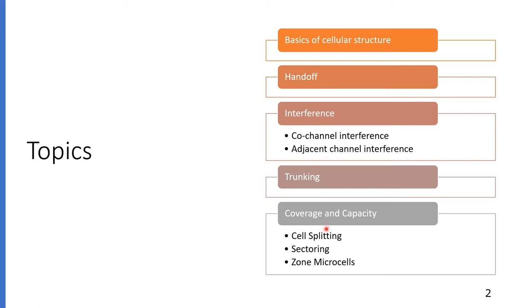We'll look at co-channel interference and adjacent channel interference, and we'll look at ranking, coverage, and capacity. These are the main topics, and within coverage and capacity we'll look at cell splitting, sectoring, and zone microcells.